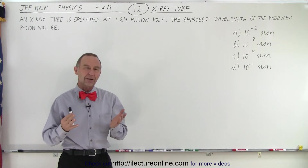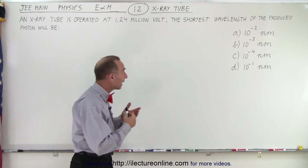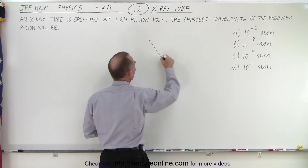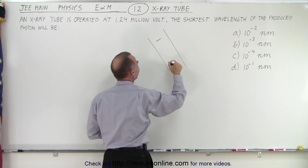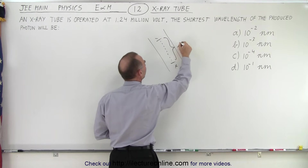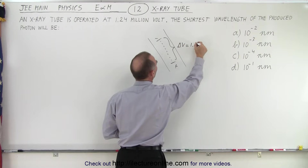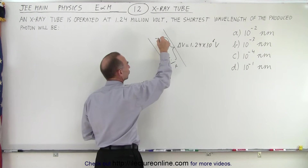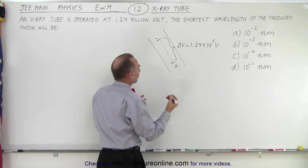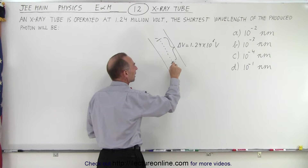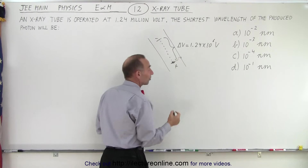We have an X-ray tube, which means we're going to have electrons accelerated from the negative to the positive side across a gap where delta V equals 1.24 times 10 to the 6th volts. As electrons jump across, they will strike the positive plate and that will then produce photons — X-rays.